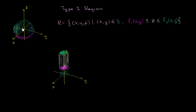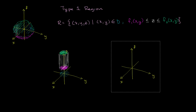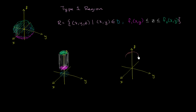Now, what would NOT be a Type 1 region? It would be something we cannot define in this way. Imagine a sideways dumbbell or hourglass shape. The reason this is not definable as a Type 1 region becomes obvious when you look at a cross section — there's no way to define only two functions, a lower bound and an upper bound in terms of z.